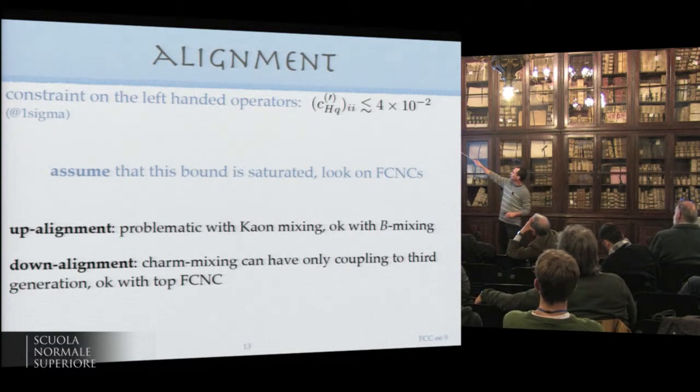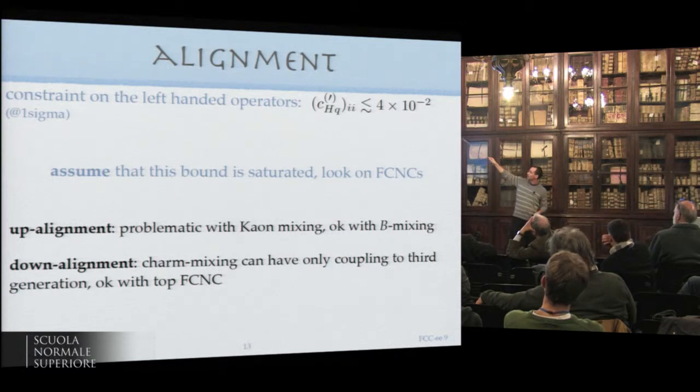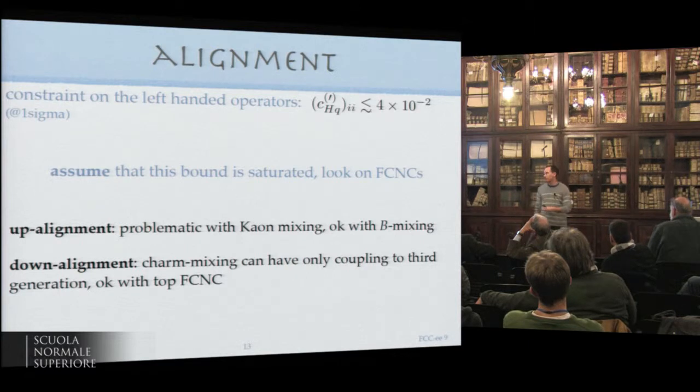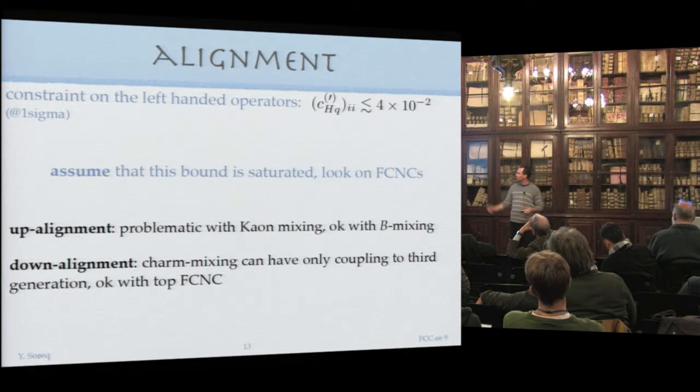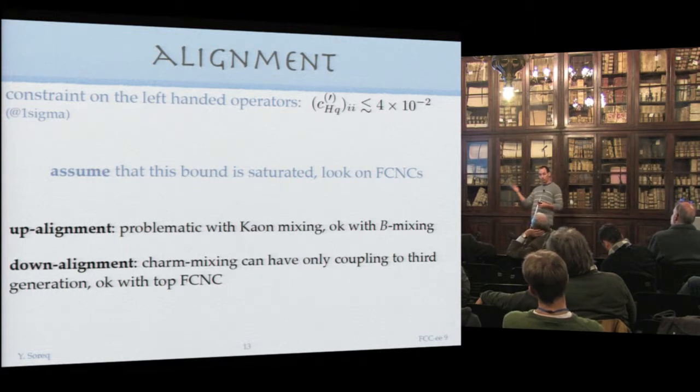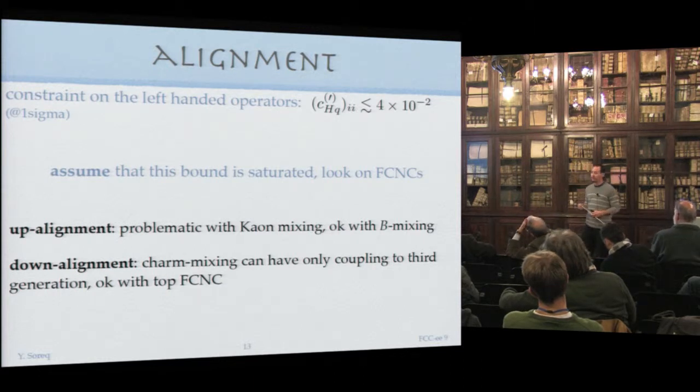Assume alignment: the dimension operators align with the standard model. The right-handed current can be diagonal for up and down separately. For the left-handed current we can align to the up sector or to the down sector. We cannot have both because of the CKM, but flavor changing neutral currents will be suppressed by the CKM. The operator that causes tension with flavor physics is the C Higgs Q. If we align to the up sector, it's diagonal in the up basis and rotated by the CKM in the down basis.